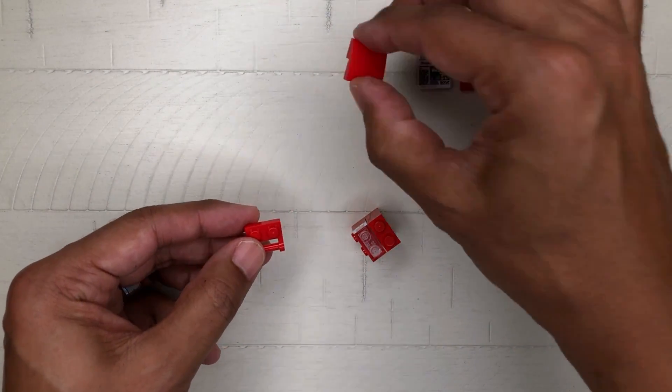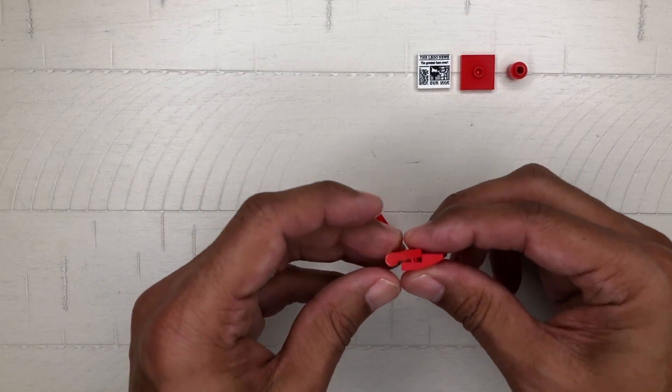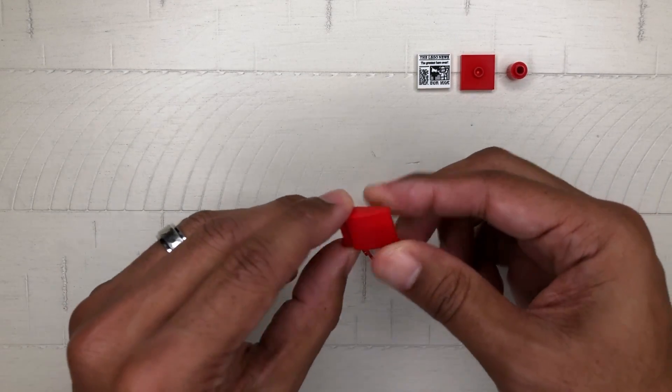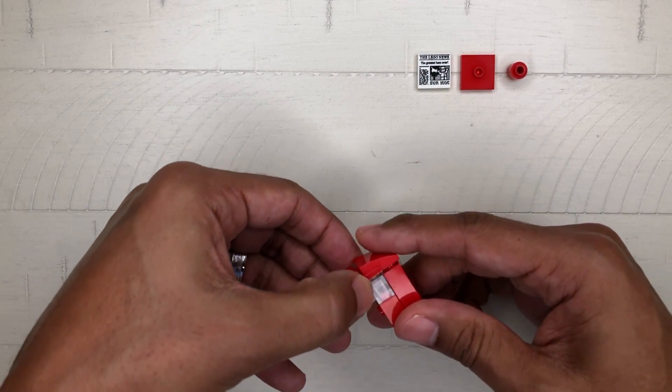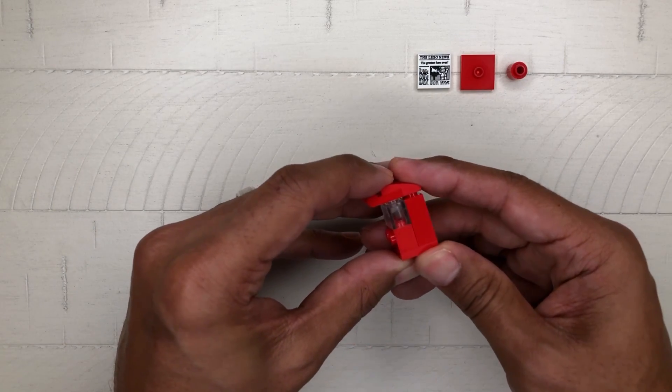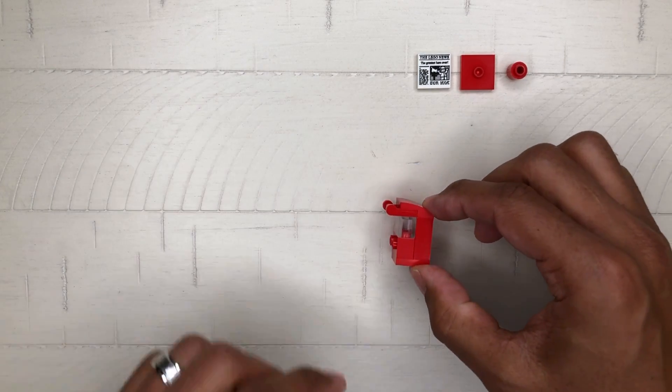Take this 1x2 plate with the bar handle and place the 2x2 curved slope on top like so. Place that on top of the previous step with the bar and the 1x2 side studded brick facing the same direction.